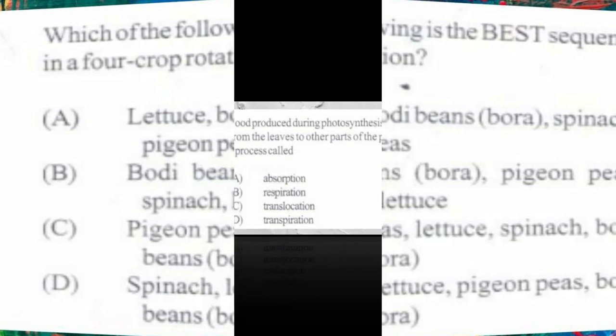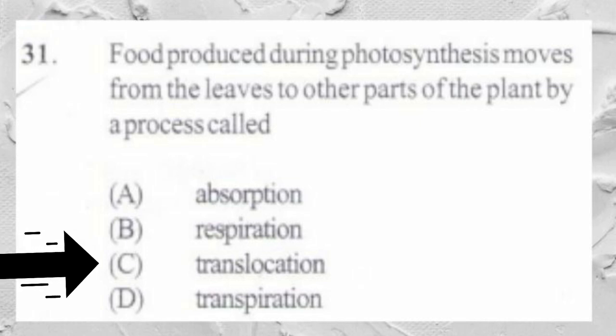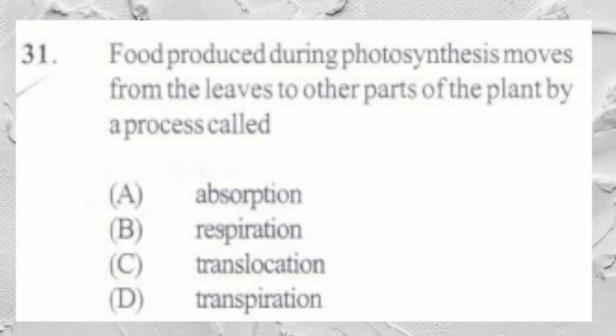Question number 31. Food produced during photosynthesis moves from the leaf to other parts of the plant by a process called: A. Absorption, B. Respiration, C. Translocation, D. Transpiration. The answer is C, translocation. The movement of any substance within a plant is called translocation.